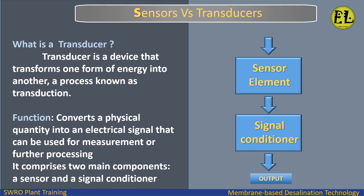What is a transducer? A transducer is a device that transforms one form of energy into another, a process known as transduction. Its function is to convert a physical quantity into an electrical signal that can be used for measurement or further processing. It comprises two main components: a sensor and a signal conditioner.